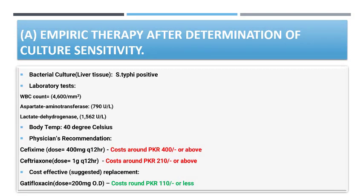Regarding empiric therapy: the bacterial culture of liver tissue showed Salmonella typhi positive. Laboratory test results came back with a WBC count of 4,600 per millimeter cube, while aspartate aminotransferase (AST) was 790 units per liter and lactate dehydrogenase (LDH) was 15,162 units per liter. Body temperature was recorded at 40 degrees Celsius.